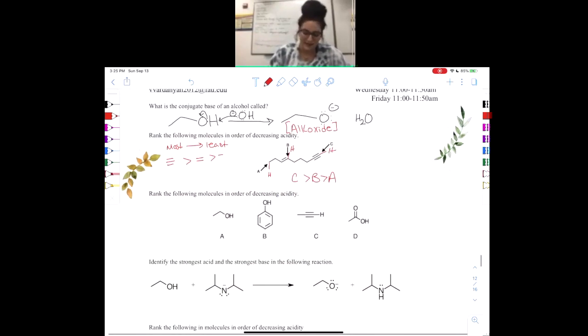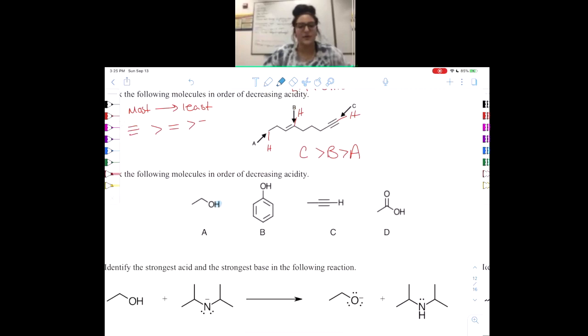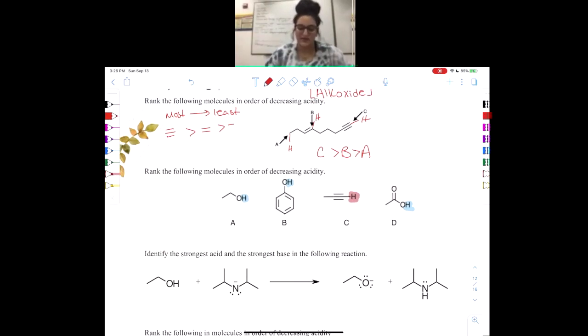Next thing we need to do for acidity is consider something called resonance. Back in Orgo 1, you guys did CARDIO. So I would review that. We're only going to cover like bits and pieces of CARDIO, but resonance is super, super important. So here we already mentioned that a triple bond is acidic compared to a single and double bond, but one thing we have to keep in mind is the atom that the hydrogen is actually attached to, which is the A of CARDIO. This hydrogen, this one, and this one are all attached to electronegative oxygen atoms, whereas the one on the triple bond is still attached to a carbon. So we know automatically that this one has to be the least acidic.